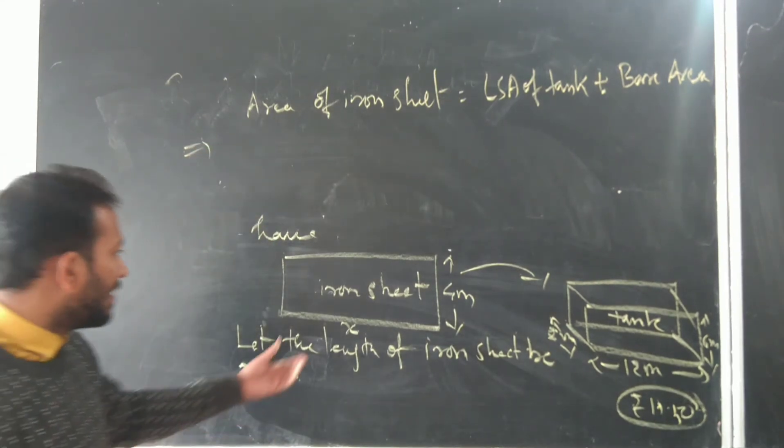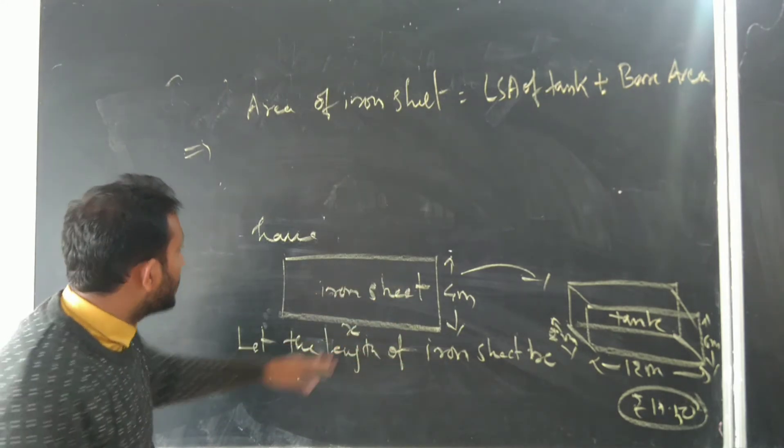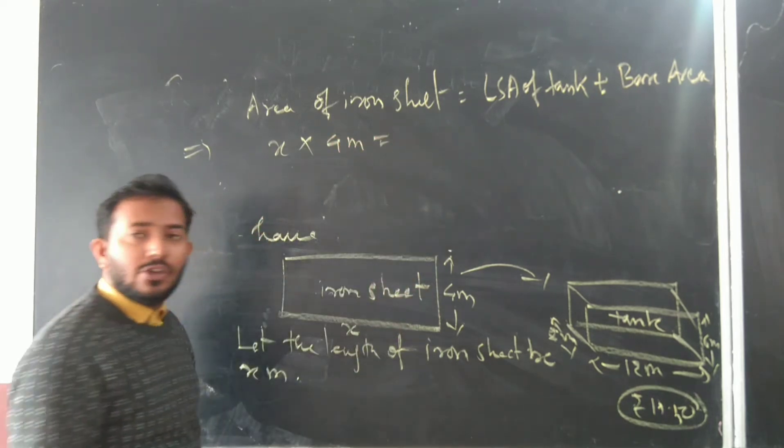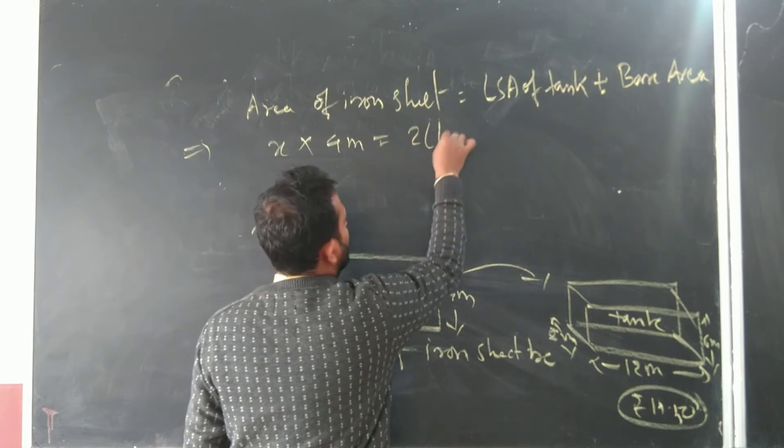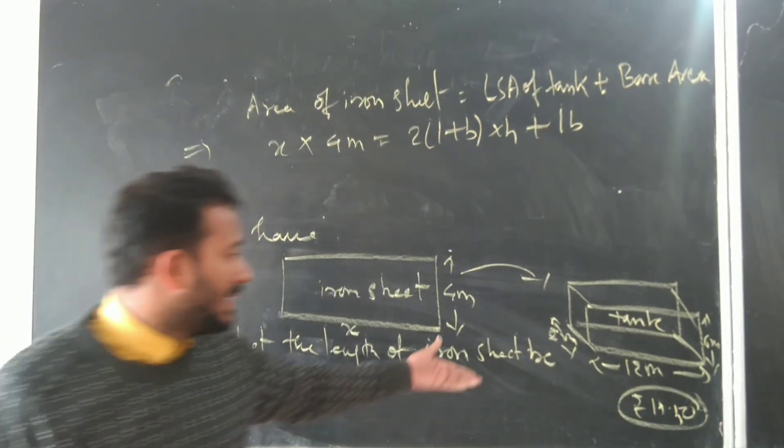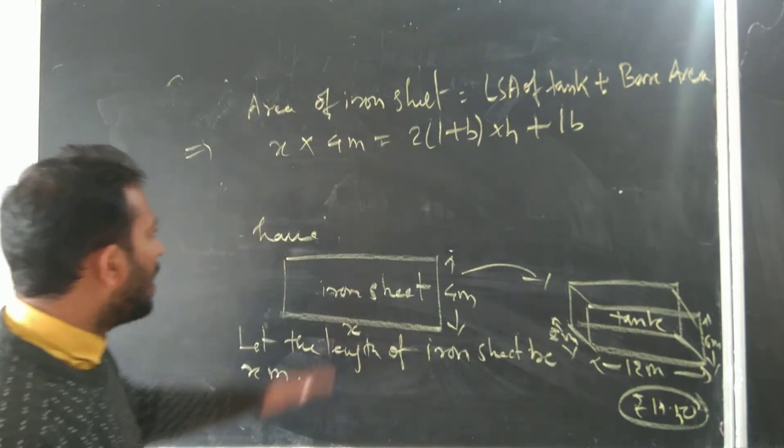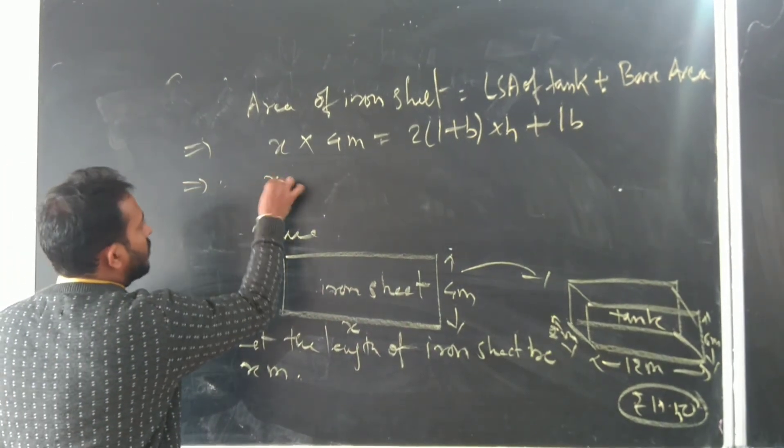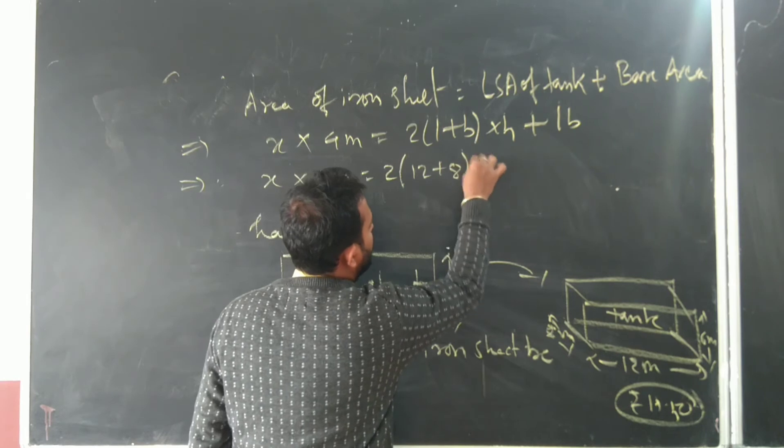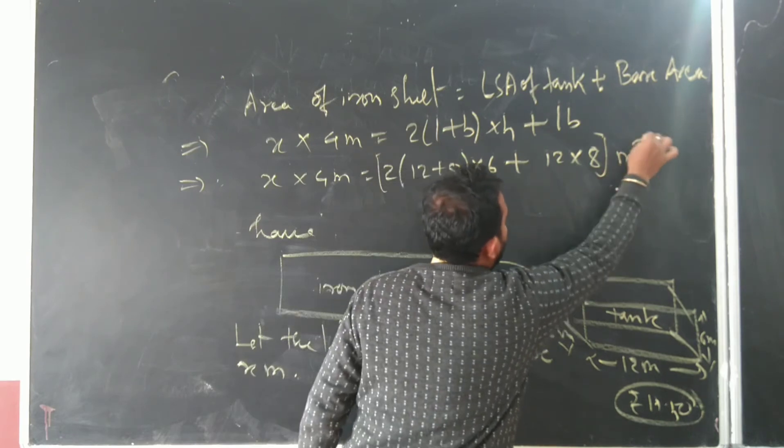Now we substitute. Area of iron sheet is length times width, so x times 4. LSA of tank: 2 times (l plus b) times h, plus base area l times b. Substituting values: x times 4 equals 2 times (12 plus 8) times 6 plus 12 times 8. Meters cancel.